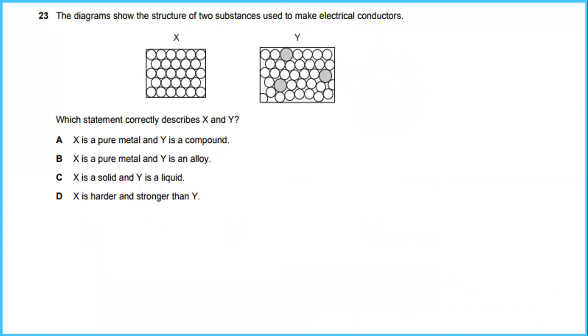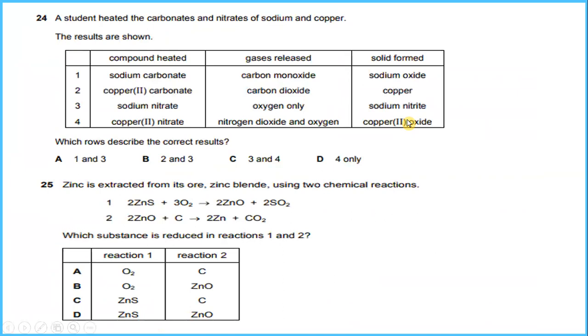Number 23, the diagram shows the structure of two substances used to make electrical conductors. X represents metals and Y is an alloy, so the answer will be B. Question 24, a student heated the carbonate and nitrate of sodium and copper. The results are shown below. Which describes the correct result? The answer will be sodium nitrate and copper 2 nitrate. Zinc is extracted from its ore, zinc blende, using two chemical reactions. Which substance is reduced in reactions 1 and 2? The answer will be B.